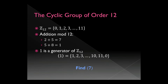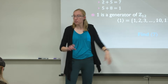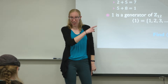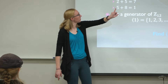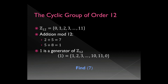Z12 has numbers 0 through 11. The difference between what we're doing and a clock is we call the top number 0, not 12. Addition mod 12: we add and make sure we stay between 0 and 11. Two plus five is seven — still between 0 and 11, so we stop. Five plus eight is 13, but 13 is bigger than 12, so subtract 12 and get 1. Like if it's 5 o'clock, eight hours later it's 1 o'clock, not 13 o'clock.